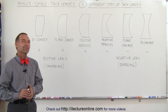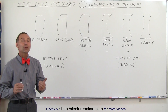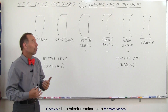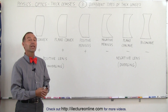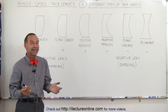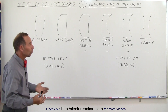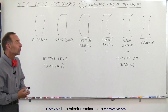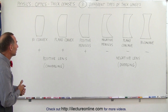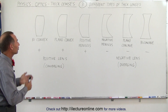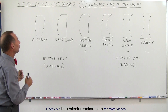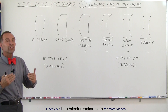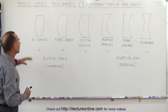Welcome to ElectronLine. It's always good to know the naming convention of whatever topic we're dealing with. In this case, thick lenses — we should know the different kinds of thick lenses there are. We have the first three lenses here, which are what we call converging lenses.